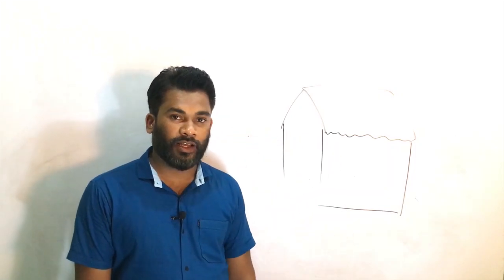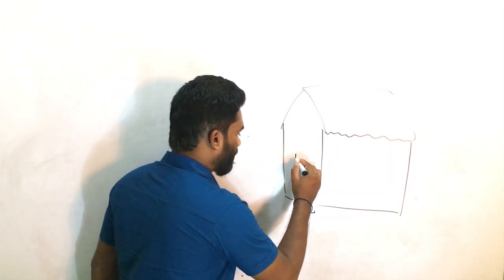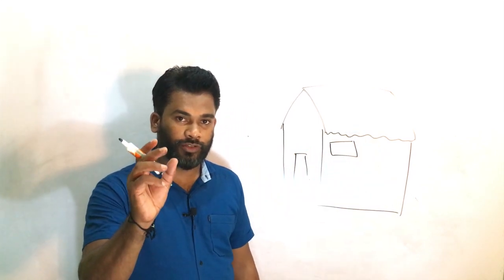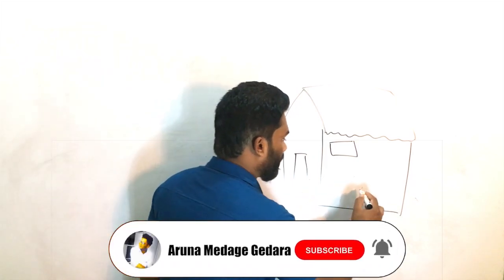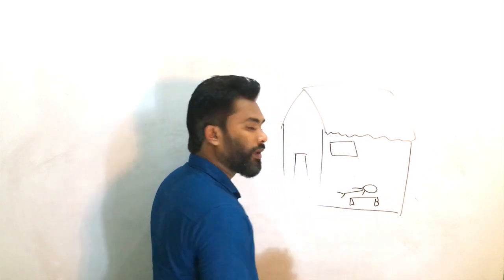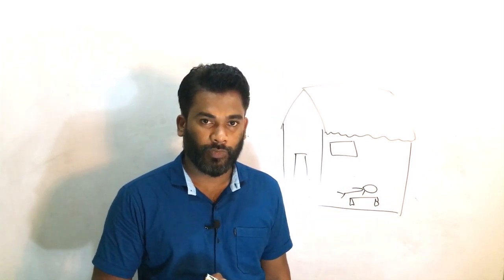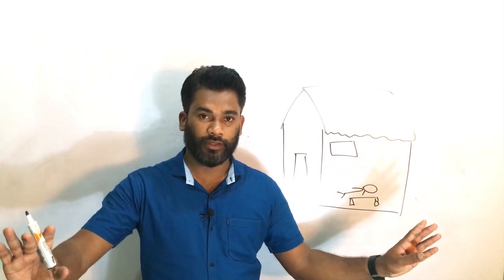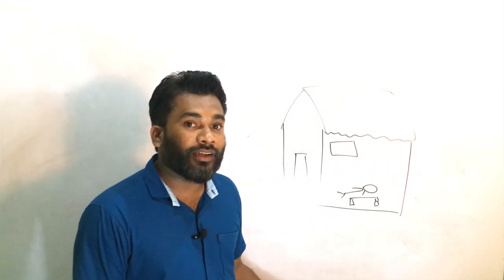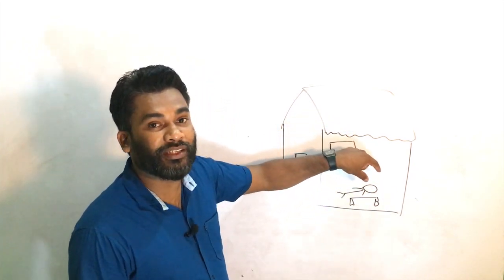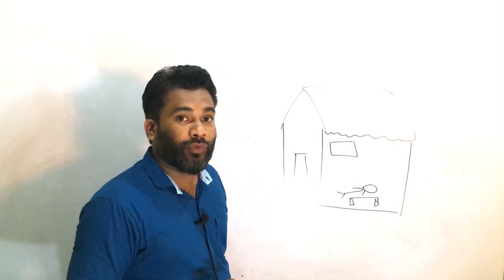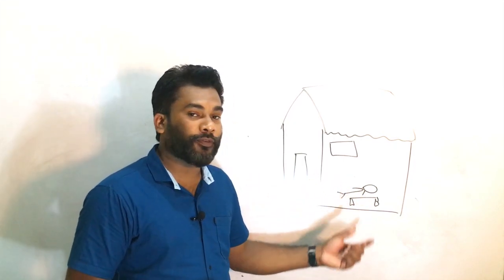Hello everyone. This is a house. In this house there is a door and a window. Inside this house there is a man always sleeping on his bed. This man is a miser — he doesn't give anything to others. He has a lot of money but he doesn't like to give money to others. He earns a lot, stores it all inside the house.